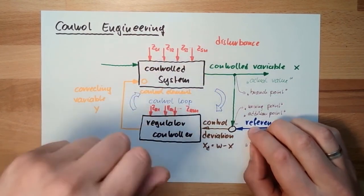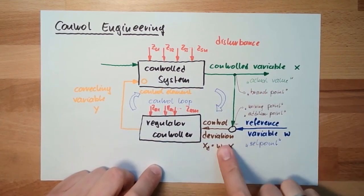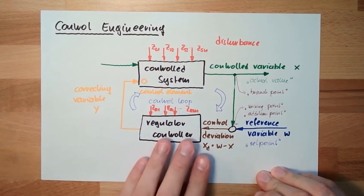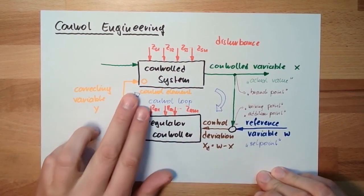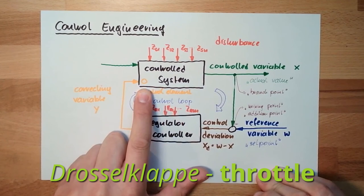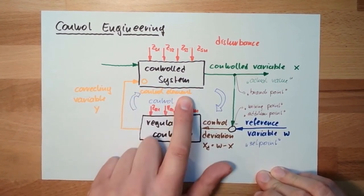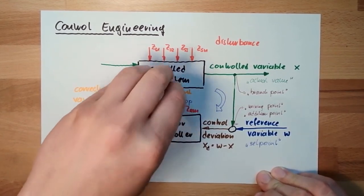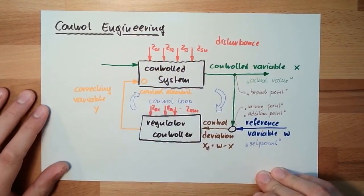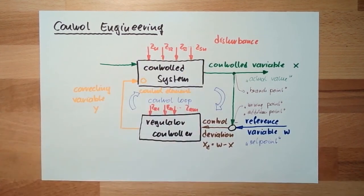If I'm going into town I will change the setpoint. The actual value and the setpoint are compared. The control deviation is the speed difference between where I am now and where I want to go. The regulator reacts with a correcting variable. The control element in this case is the throttle — the correcting variable sets the desired throttle position, and the throttle opens or closes, giving the engine more or less power and changing the vehicle speed.